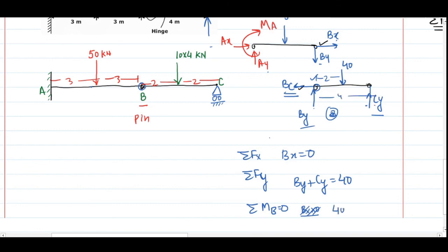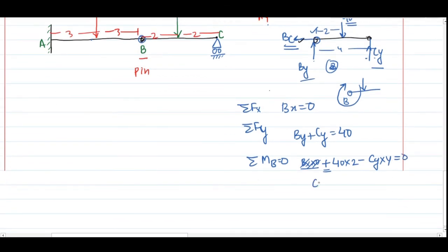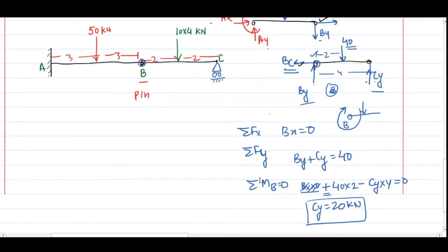The moment equation at B: 40 into 2 minus Cy into 4 = 0. The 40 kN force acts downward and causes clockwise rotation (positive); Cy acts upward and causes counterclockwise rotation (negative). Solving gives Cy = 20 kN. This is the answer to the GATE 2020 problem — if you understand free body diagrams, applying the moment balance directly gives Cy = 20 kN.